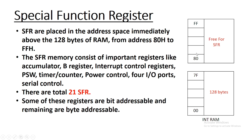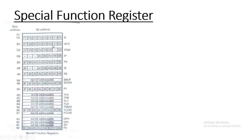There are a total of 21 SFR in 8051, and those SFR usually consist of important registers like the accumulator, B register, interrupt control register, PSW, timer counter, power control, IO ports, and serial control. Some of these registers are bit-addressable and the remaining are byte-addressable. This is the structure of the Special Function Register.